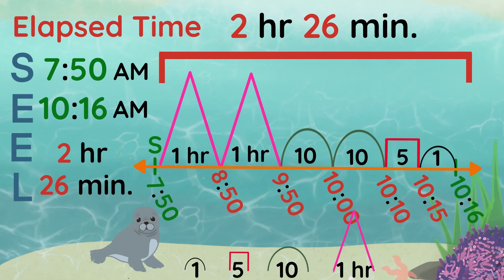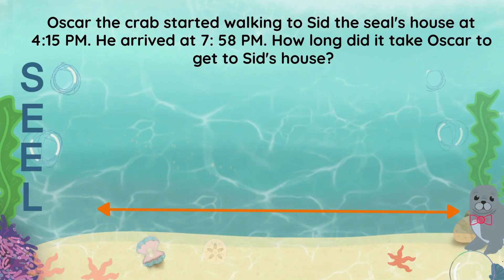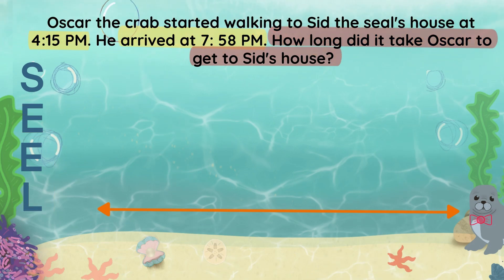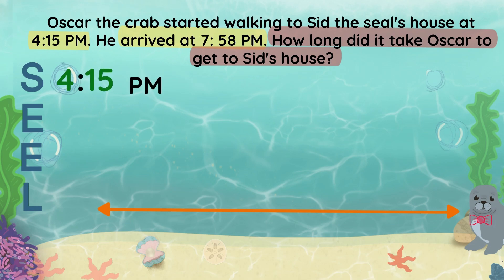Let's try one more. Oscar the crab started walking to Sid the seal's house at 4:15 PM. He arrived at 7:58 PM. How long did it take Oscar to get to Sid's house? According to SEAL, I need to find the start time, end time, and elapsed time. Oscar starts his walk at 4:15 PM and ends his walk at 7:58 PM. I have the start time and end time — that means, once again, I am missing the elapsed time.